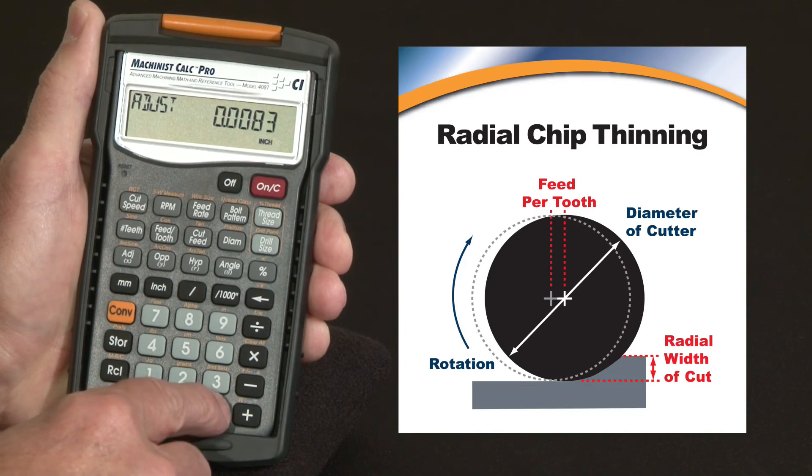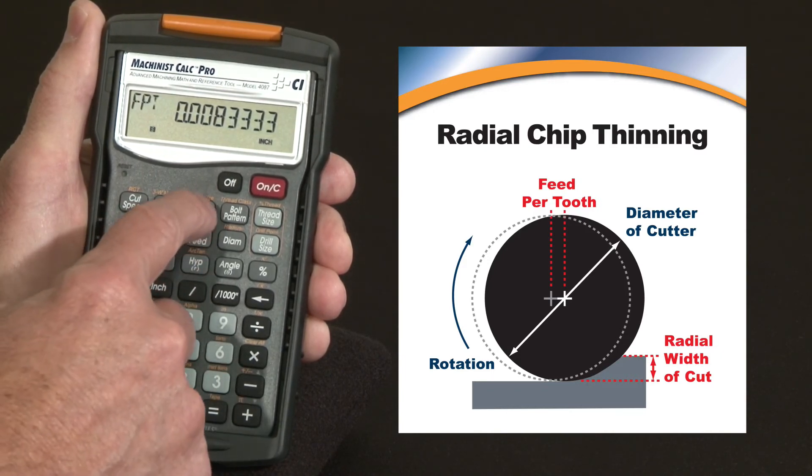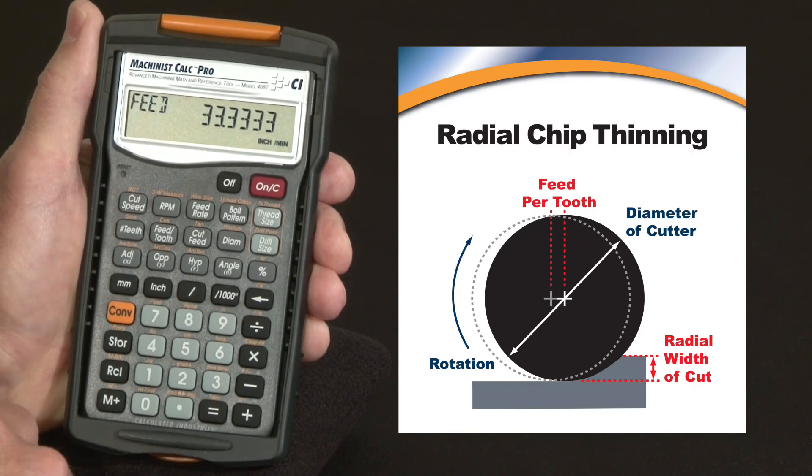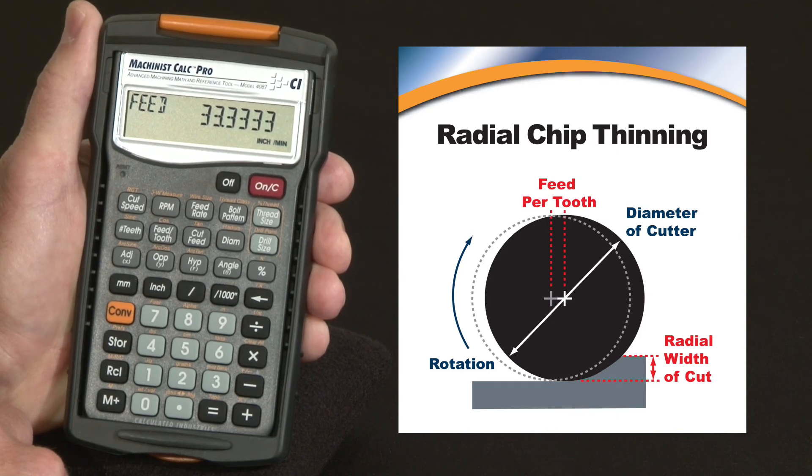The way we enter that is just hit equals, feed per tooth. Now when we hit the feed rate key, it recalculates it, and you see we've optimized it. We can now run that through at 33 inches per minute. Much faster, much more efficiently.